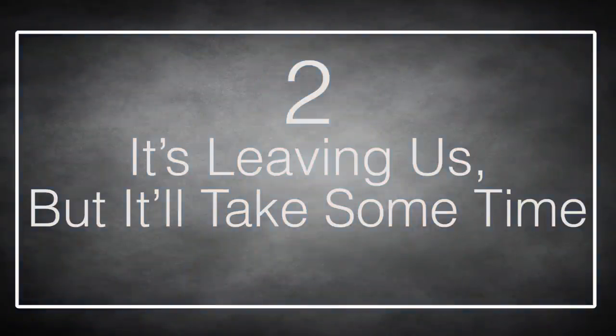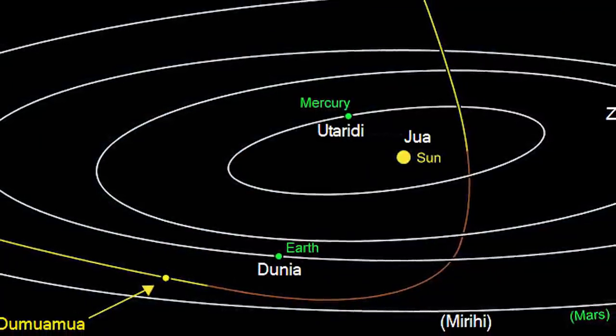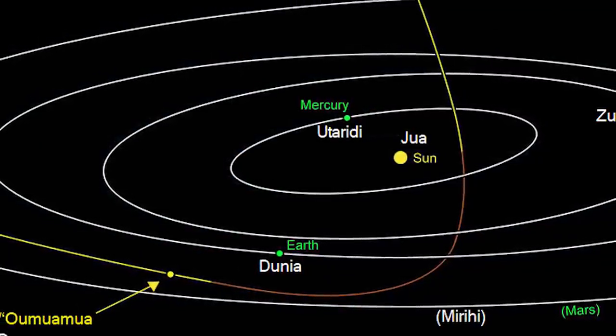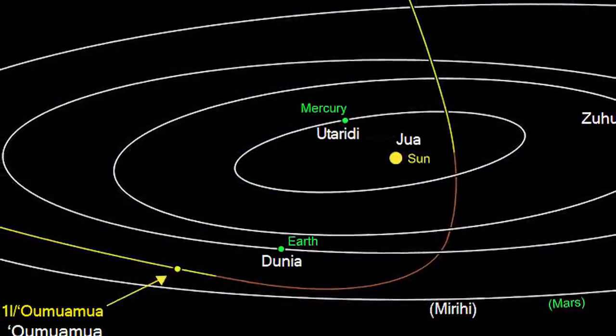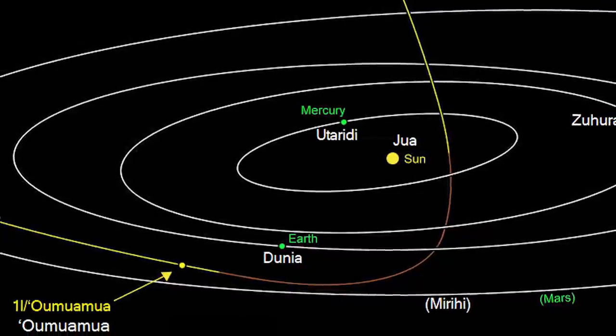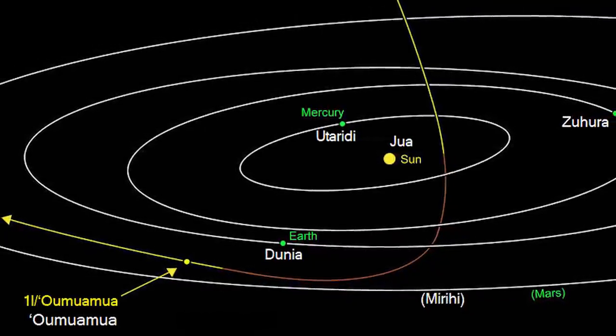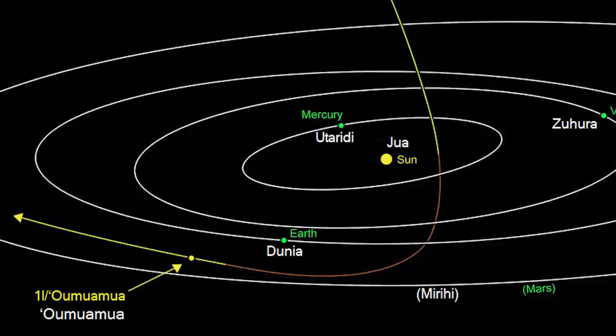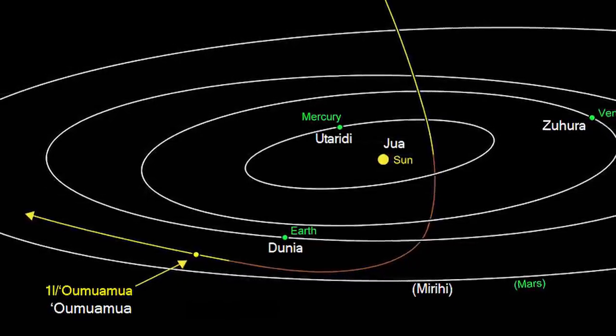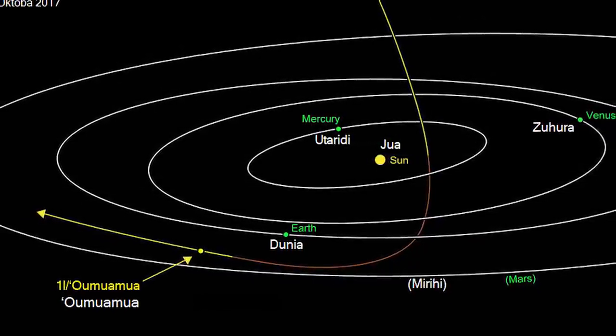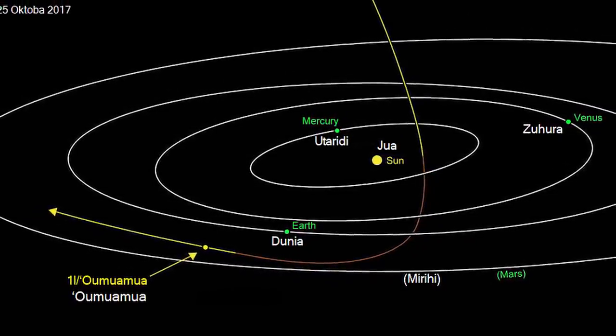Number 2. It's Leaving Us But It'll Take Some Time. Oumuamua is on its way out of the solar system, headed back to the stars at a rate of 26 kilometers a second. But even at that speed, it'll take 20,000 years for it to leave our solar system entirely. Meanwhile, it's becoming increasingly difficult, if not impossible, to observe Oumuamua with existing telescopes, an especially unfortunate situation given its rarity.